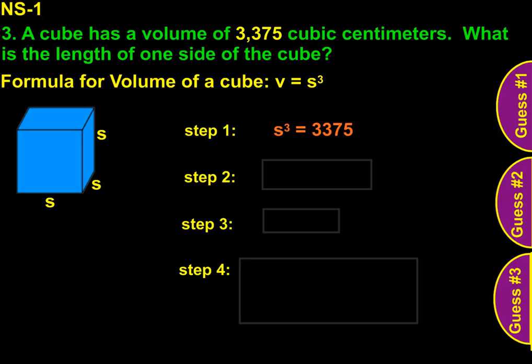And we know that we want to get S by itself to find the length of one side. And the way that we remove a cube is to find the cube root. So the cube root of S cubed equals the cube root of 3,375.